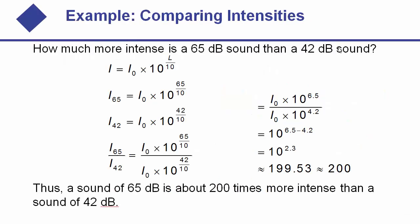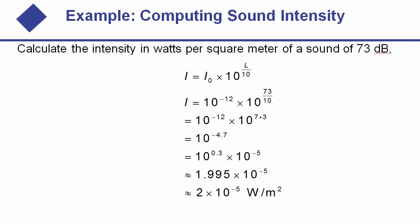Example: how much more intense is a 65 decibel sound than a 42 decibel sound? Using i = i₀ × 10^(L/10), we write i₆₅ and i₄₂ and form their ratio. The i₀ terms cancel, leaving 10^(65/10) over 10^(42/10) = 10^(6.5 minus 4.2) = 10^2.3, which is approximately 200. A 65 dB sound is about 200 times more intense than a 42 dB sound. A separate problem asks for the absolute intensity in watts per square meter of a 73 dB sound, which is solved by direct substitution into the formula.